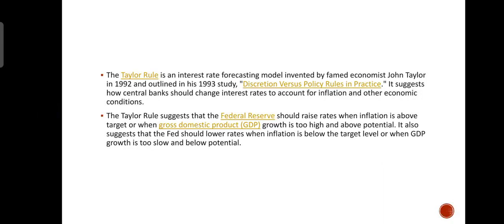The Taylor Rule is an interest rate forecasting model invented by famed economist John Taylor in 1992 and outlined in his 1993 study, Discretion vs Policy Rules in Practice.